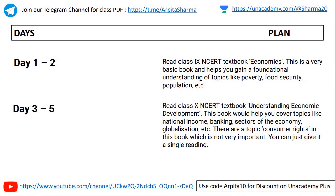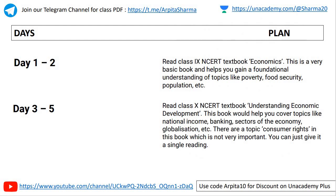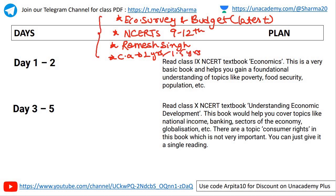Let's begin with how to cover Indian economy in 50 days. The resources you require are: first, basic NCRTs from class 9 to 12; second, the very important book Indian Economy by Ramesh Singh for prelims and GS Paper 3; third, the latest Economic Survey and the latest Budget; and fourth, current affairs of the last one and a half to two years.